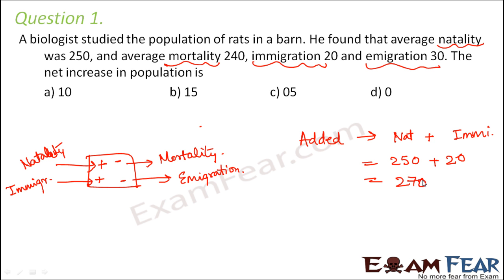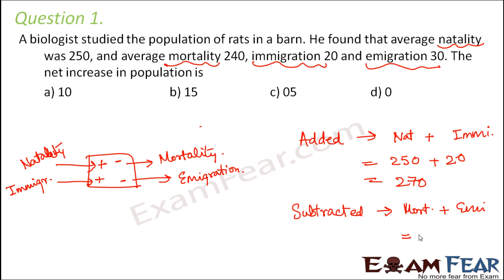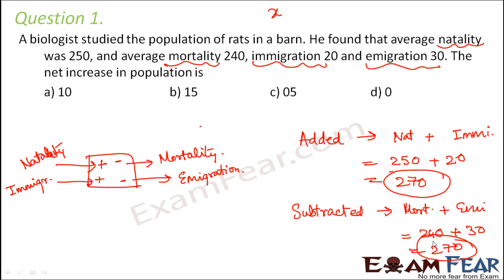At the same time, there was a decrease due to mortality and emigration: 240 plus 30, which also equals 270. So if the population increased by 270 and decreased by 270, the net increase in population is 0. Therefore option D is the correct answer.